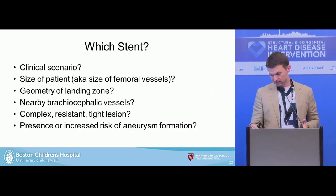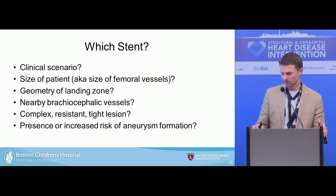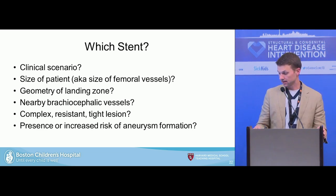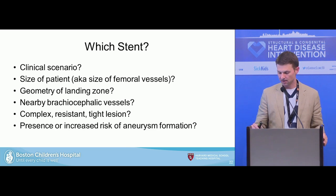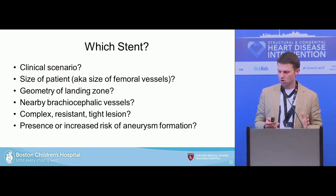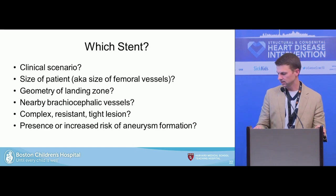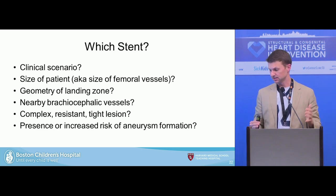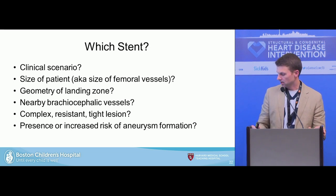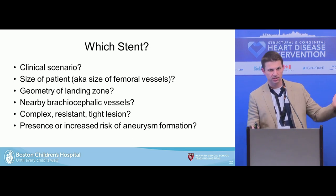Which stent? There are a lot of different clinical scenarios, so here's generally what I think about: the clinical status of the patient, the size of the patient (i.e., the femoral vessel size), the geometry of the landing zones — whether you need a stronger stent like a Palmaz, something with more curve like a Genesis XT, or a hybrid stent. Are you close to brachycephalic vessels you can't close off, so you need an open cell stent? Is the lesion complex, resistant, or tight? Is there increased risk of aneurysm formation, such as in a patient with a syndrome or an older patient?